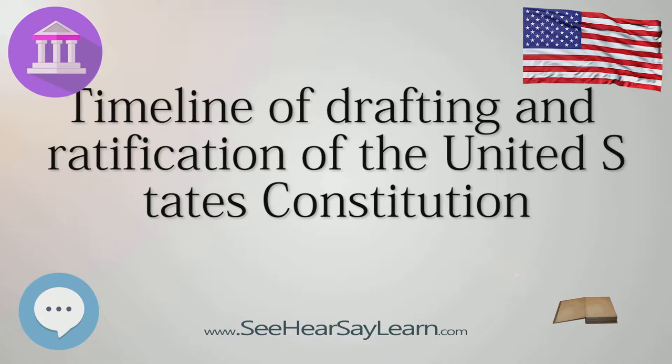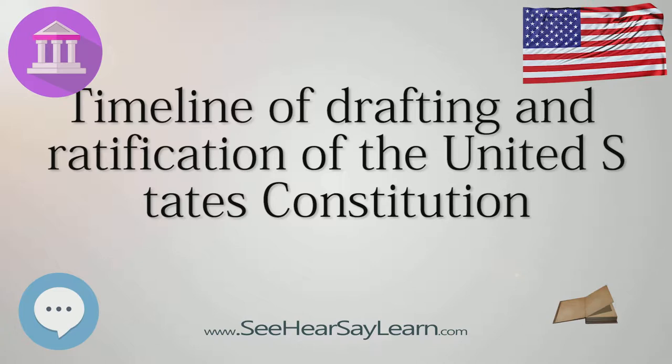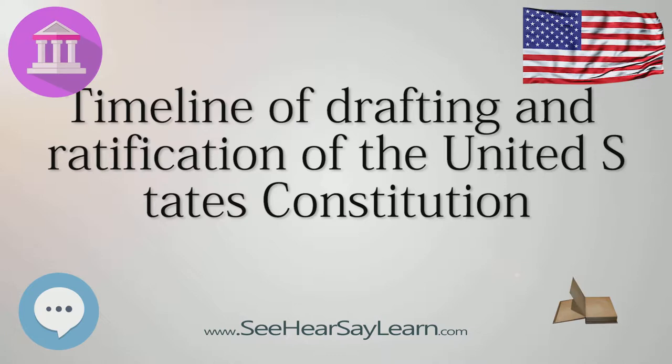May 30: Nathaniel Gorham is elected to serve as chairman of the Committee of the Whole. June 15: The New Jersey Plan, also known as the Small State Plan or the Patterson Plan, for structuring the federal government is presented by William Patterson.